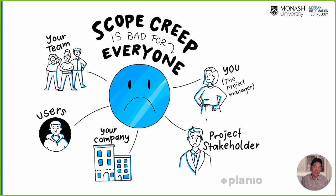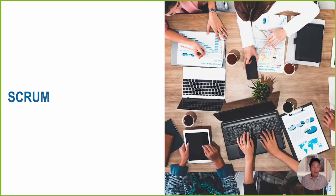Scope creep is very bad — it impacts your team, the end user, your company, and stakeholders will not be happy. As a project manager, you may not be satisfied because you cannot deliver on time within the budget. There are frameworks and methods that follow the 12 agile principles. Today we will focus on two frameworks: Scrum and Kanban. We will start with Scrum first, and I encourage everyone in this unit to use Scrum.